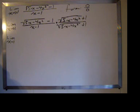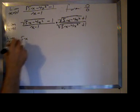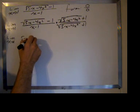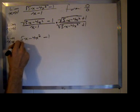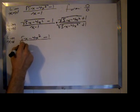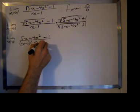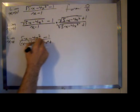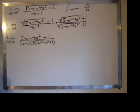So we have the limit as x goes to 1 of 5x minus 4x squared minus 1 over the quantity x minus 1 times the quantity square root of 5x minus 4x squared plus 1. Now we still have the form 0 over 0, but we're a little closer. We hope that the numerator factors, and it does.